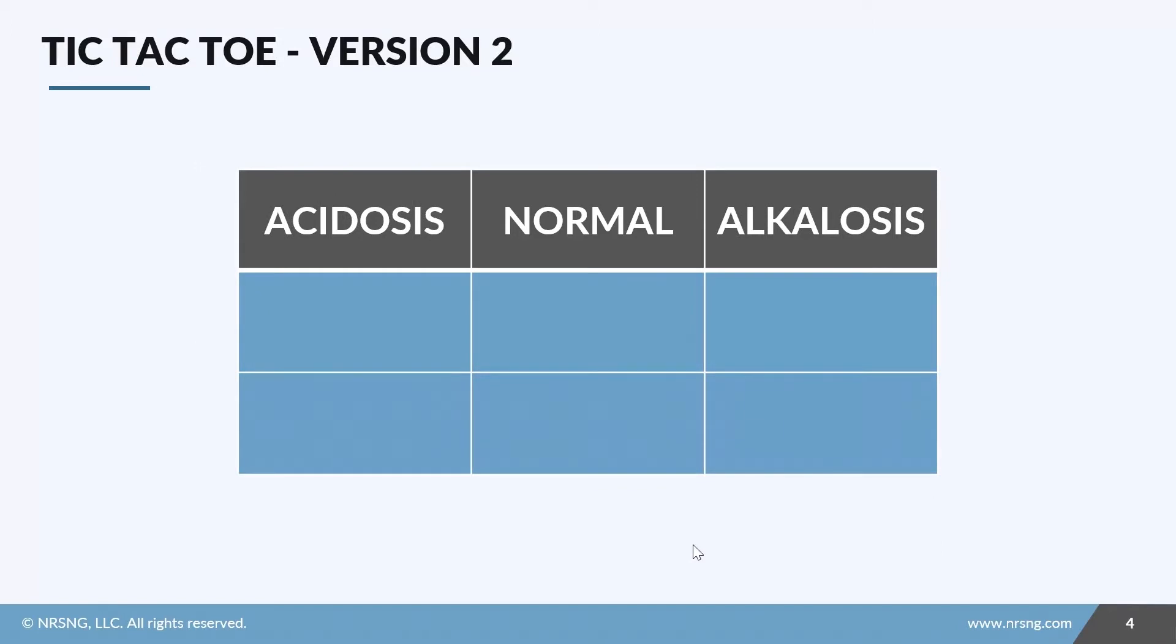So in version two, you're going to set up a little table that looks like this. Three columns: acidosis, normal, and alkalosis, and you'll have two rows.